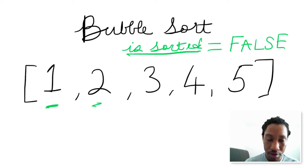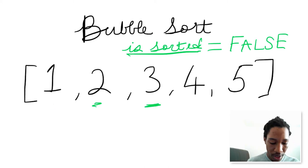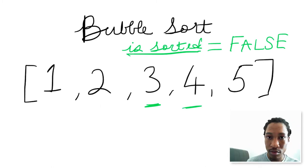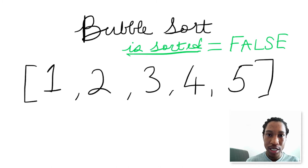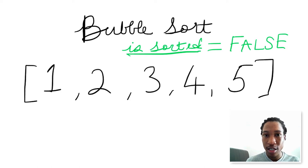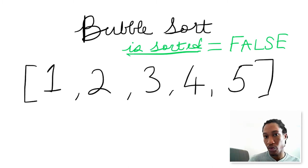So now we compare 1 and 2 — is 1 less than or equal to 2? Yes, so we do nothing. Then we compare 2 and 3 — yes, 2 is less than or equal to 3, so we do nothing. Then we compare 3 and 4 — yes, do nothing. We compare 4 and 5 — yes, we do nothing. So now we ask ourselves: did we ever swap elements while going through this iteration? No, we did not swap any elements. This means all elements were in place, and we can be 100% sure that the array is sorted. So now we return the sorted array: 1, 2, 3, 4, 5. Which is perfect.